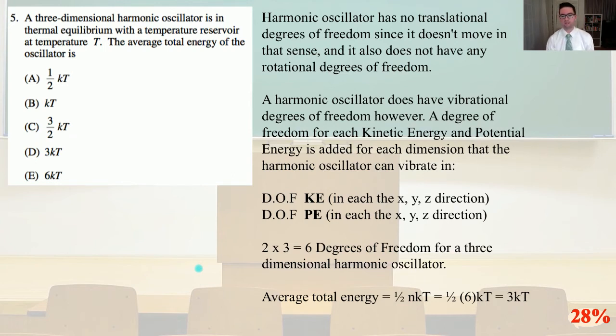Our average total energy equals one-half nkT. So one-half times our number of degrees of freedom, six, times kT equals 3kT. And that is answer D.